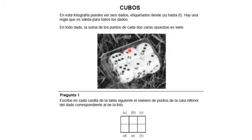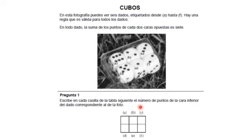Cubos. En esta fotografía puedes ver seis dados etiquetados desde A hasta F. Hay una regla que es válida para todos los dados: en todo dado, la suma de los puntos de cada dos caras opuestas es siete.